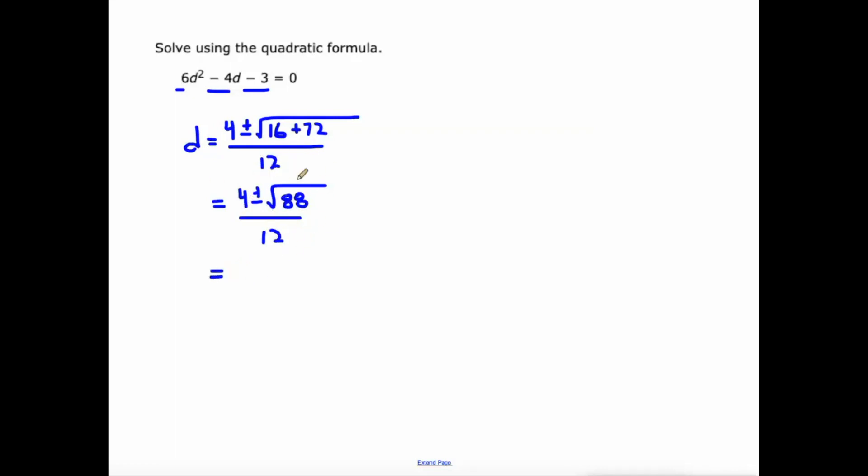And at this point, we can go ahead and reach for our calculator to get our answer. This is the irrational answer. It can be simplified a little bit if we wanted to leave it as a fraction. I'm not going to get into that in this particular video. We'll wait until we're simplifying radicals. So 4 + √88 ÷ 12 is 1.12, and 4 - √88 ÷ 12 is negative 0.45. You should try punching that into your calculator and make sure you get those numbers.